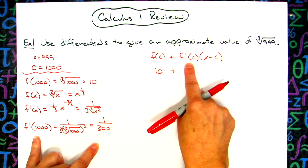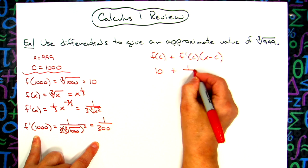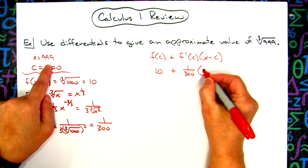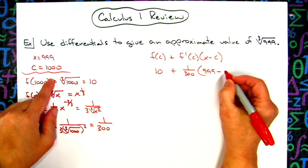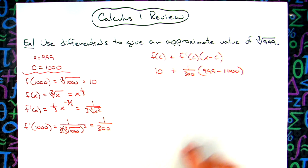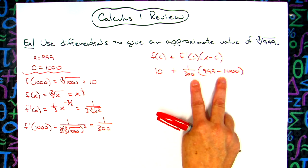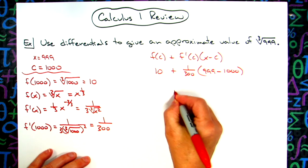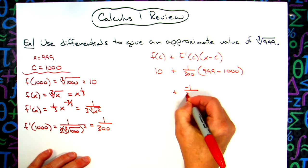So this is my f prime of c value. So I've got a 1 over 300. Just simply plugging in x and c. So this is going to be that 999 minus 1,000. We're going to simplify this. If I do this, I'm going to have a negative 1. So this will be a negative 1 over 300 right here.